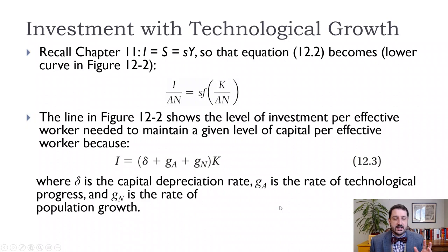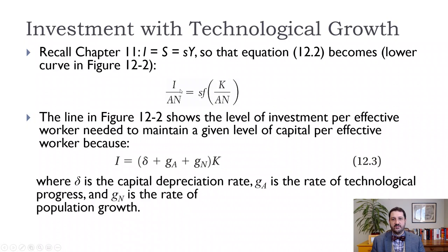Let's think about how we add to capital and how we invest. Remember that investment equals savings, and as long as we assume that public savings is zero — so taxes equal government spending — then savings equals the savings rate s times y. So investment per effective worker is now equal to the savings rate s times output, which is a function of capital per effective worker.